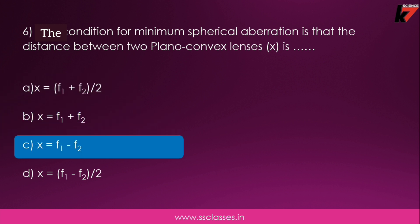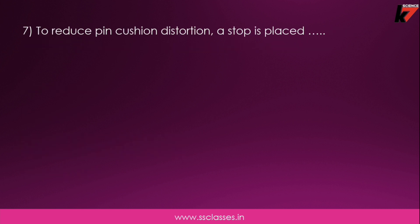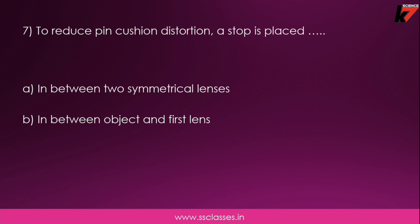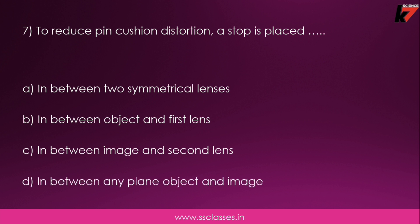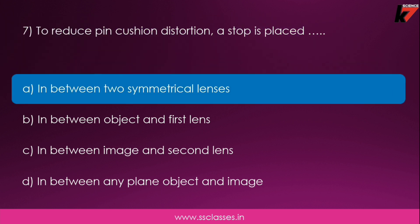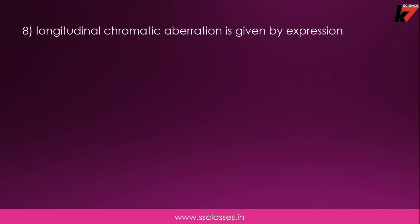Seventh question: to reduce pin-cushion distortion, the stop is placed — in between two symmetrical lenses, or in between the object and first lens, or in between the image and second lens, or in between any object and image? The correct answer is option A: the stop is placed in between two symmetrical lenses.